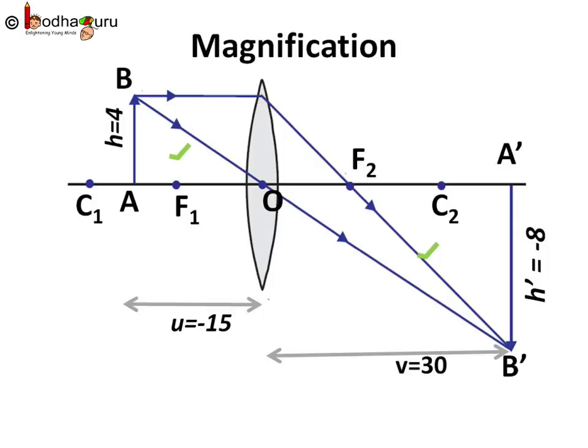Say the object is placed at 15 cm from optical centre, so we say U is equal to minus 15. Remember Cartesian system, so left of O is negative. Say the image formed is 30 cm from the optical centre, so we say V is equal to plus 30.